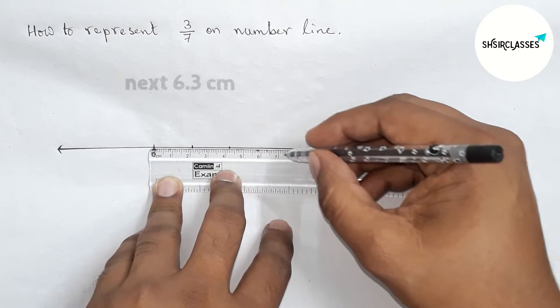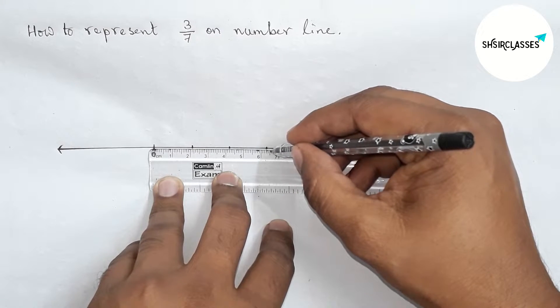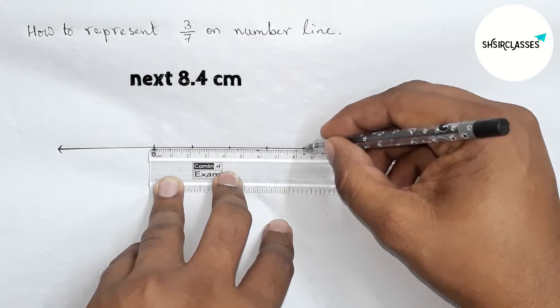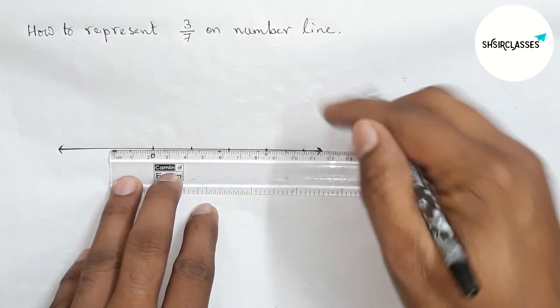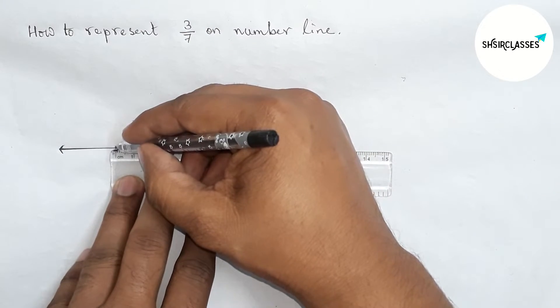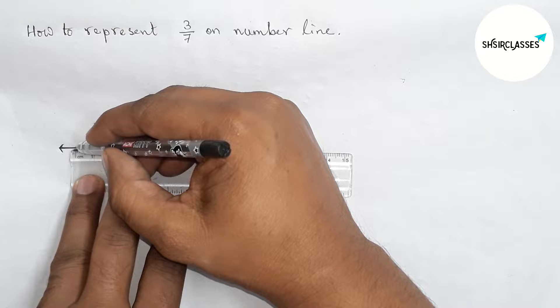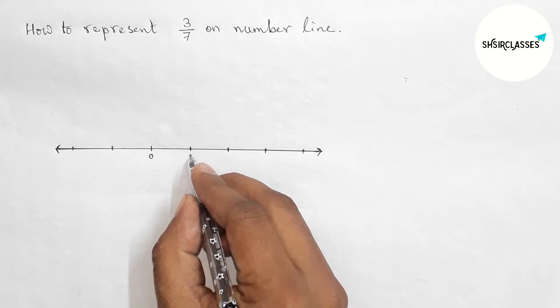Third number will be 6.3 centimeters and fourth number will be 8.4 centimeters, and this is continuous. Now on the negative side, taking the same length, 2.1 centimeters, as minus one.